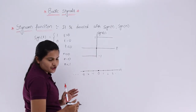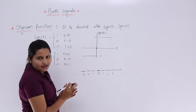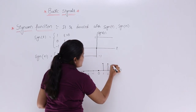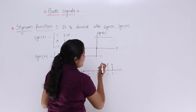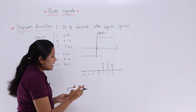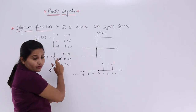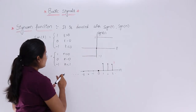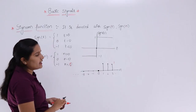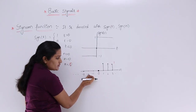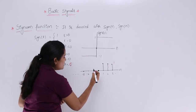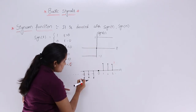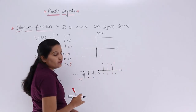According to the definition, sgn(n) equals 1 when n greater than 0, so you have samples at n equal to 1, 2, 3 and so on up to infinity at amplitude 1. At n equal to 0 there is nothing — just 0. For n less than 0, meaning minus 1, minus 2, minus 3, the signal value is minus 1, shown as downward samples. So the positive samples are plus 1 and the negative-side samples are minus 1.